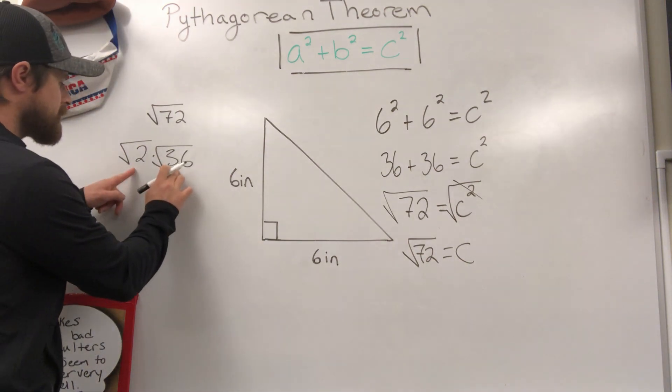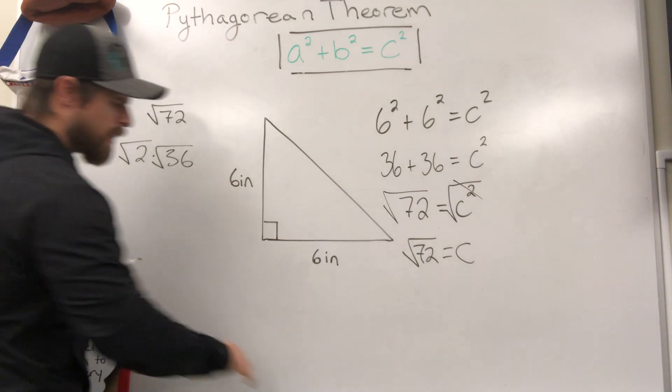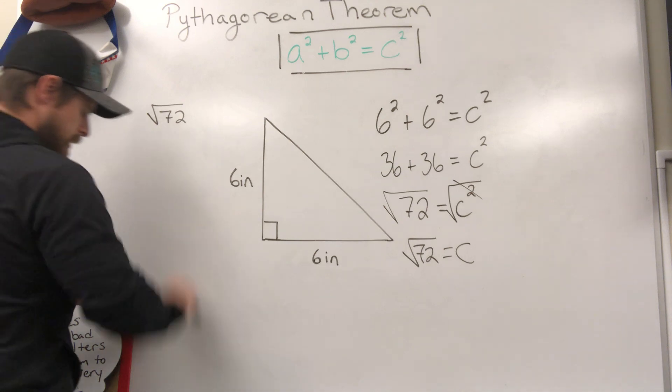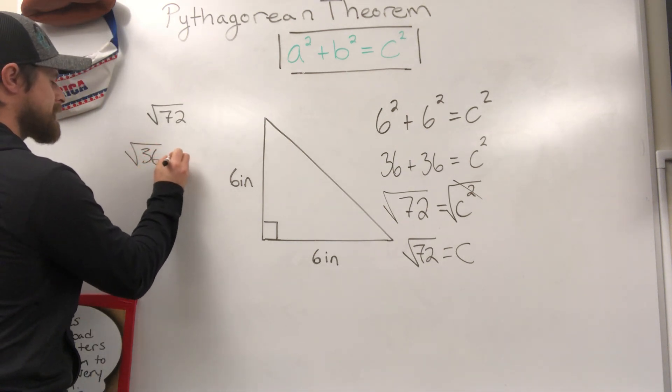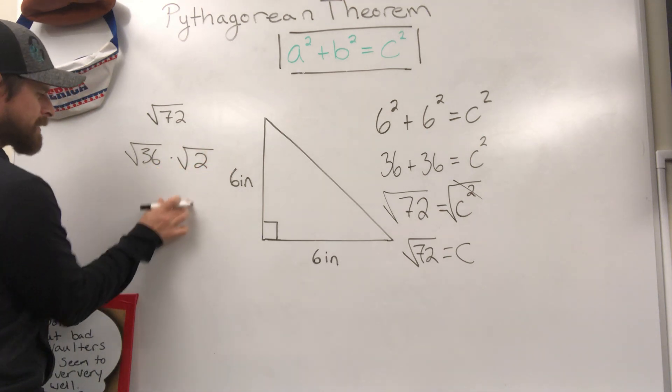So now all I need to do is simplify this right here, and I probably should have put the square root of 36 first. I'm going to erase that real quick and do that for you guys. I think of square root of 36 times the square root of 2. Okay? Now simplify these.